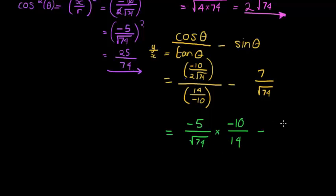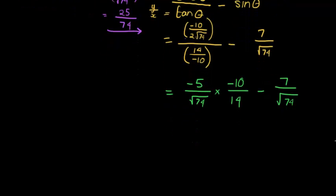And on this side we have negative 7 over square root of 74. Let's continue here. Negative 5 times negative 10 gives me positive 50. 14 times the square root of 74 is 14 square root of 74. Minus 7 over the square root of 74.